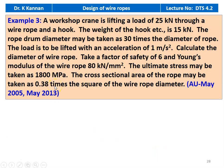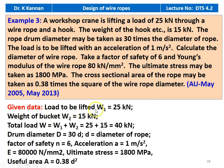Example number 3, from May 2005 and May 2013 question paper. A workshop crane is lifting a load of 25 kilonewton via a wire rope and hook. The weight of the hook etc. equals 15 kilonewton. The rope drum diameter may be taken as 30 times the diameter of the rope. The load is to be lifted with an acceleration of 1 meter per second squared. Calculate the diameter of the rope. Take factor of safety of 6, Young's modulus of the wire rope is 80 kilonewton per millimeter squared, and the ultimate stress is 1800 megapascal. The cross-sectional area of the rope is 0.38 times the square of the rope diameter. Total load W equal to 25 plus 15 equal to 40 kilonewton.